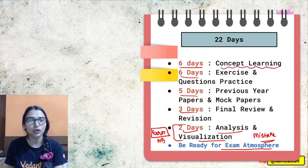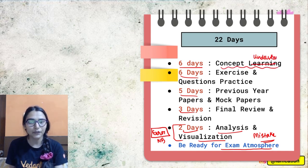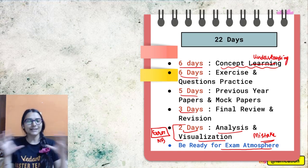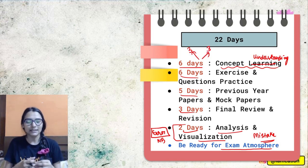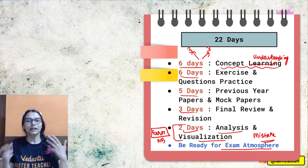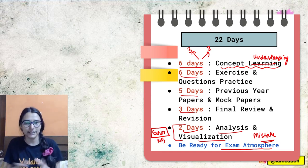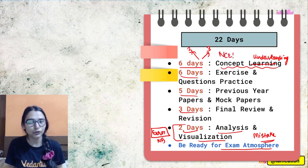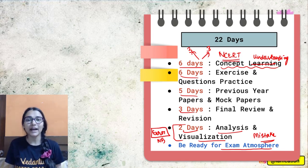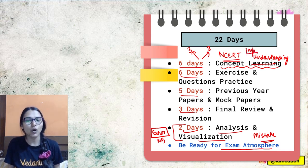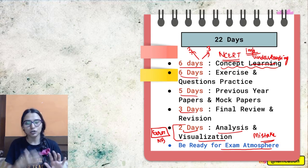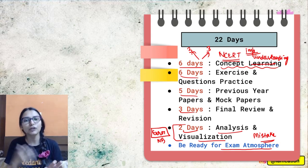The first six days we will be giving to the concept understanding, not learning. It is better if you understand the concept. Now this is something you can divide these six days, three and three days. In like first three days, I can keep carbon and its compounds. Next three, periodic classification. So the first thing is concept understanding. You have to go through your NCERT textbook's important lines. I hope that you guys have read the NCERT textbook by now already.